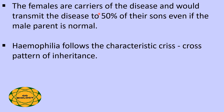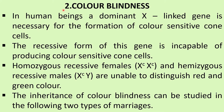Females are carriers of the disease and would transmit the disease to 50 percent of their sons even if the male parent is normal. Hemophilia follows the characteristic criss-cross pattern of inheritance, where characters are transferred from grandmother to granddaughter through her son, and likewise from grandfather to grandson through his daughter.